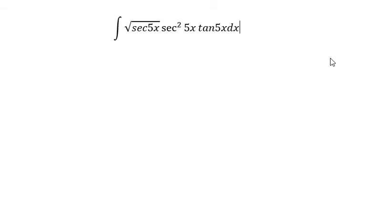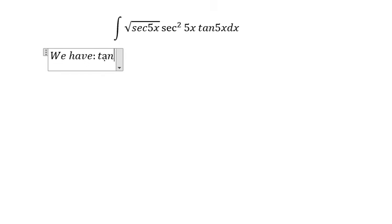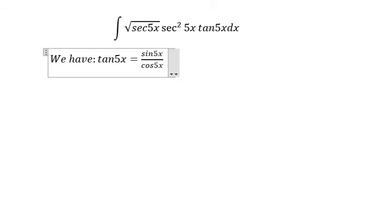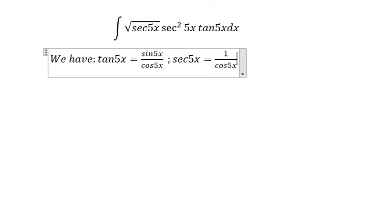Hello everybody. Today I will talk about calculus — the topic is integration. I will show the technique for how to answer the question. We have the formula tan(5s) equals sine(5s) over cosine(5s), and sec(5s) equals 1 over cosine(5s). Now we need to arrange everything.